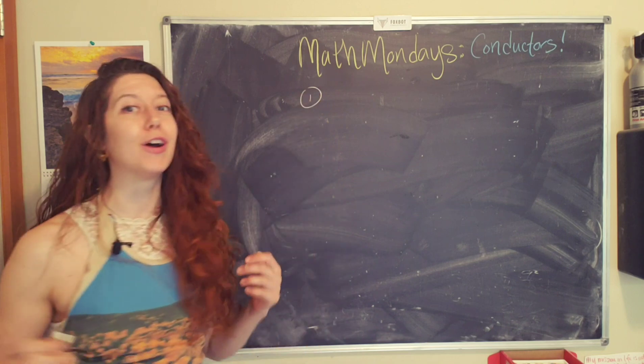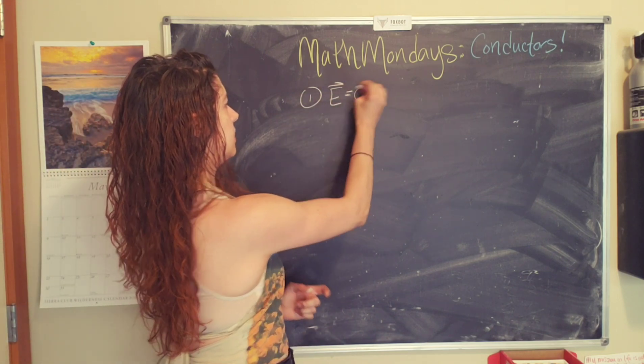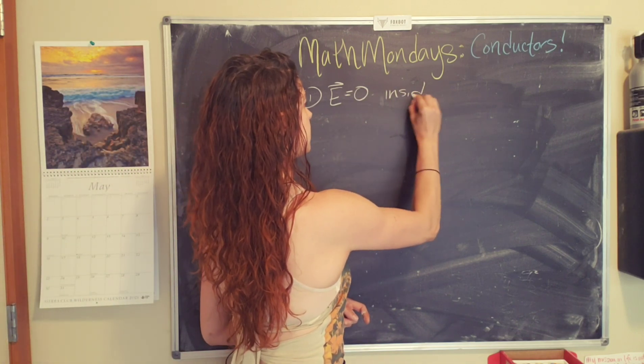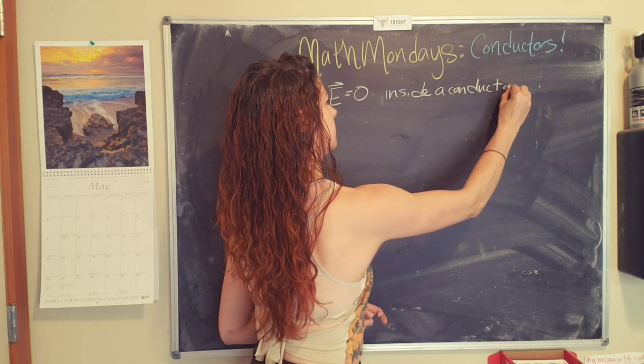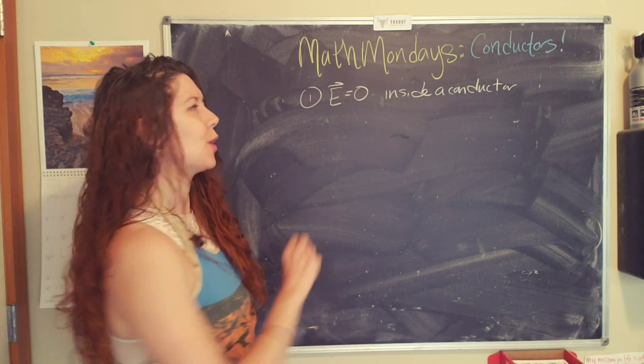And this results in a number of really interesting and useful properties of conductors, which we will cover. So the first one is that the electric field, or the E field for short, is zero inside a conductor. Wait, what? That's pretty wild. Why does this happen?